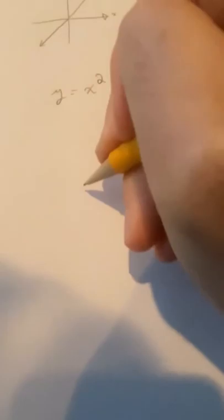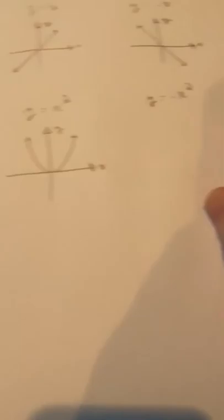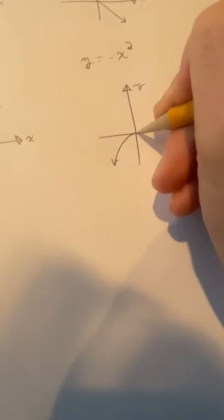Y equals x squared is a parabola centered at the origin. And y equals negative x squared is also a parabola centered at the origin — it just opens down instead of up. It's concave down, not concave up.